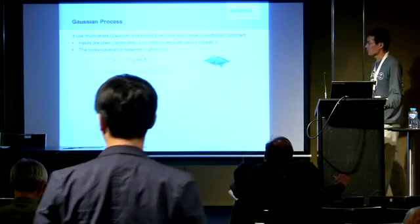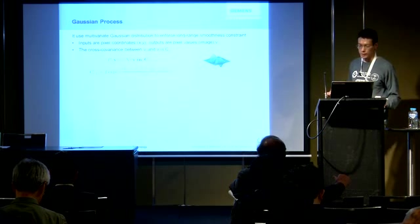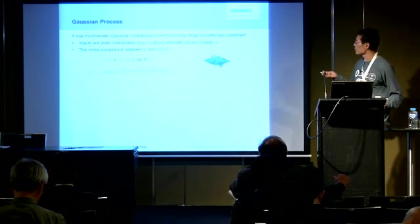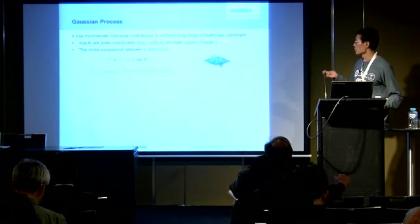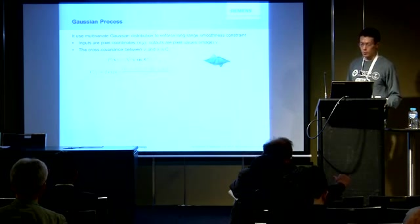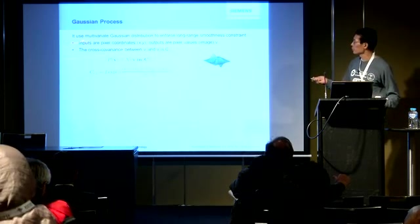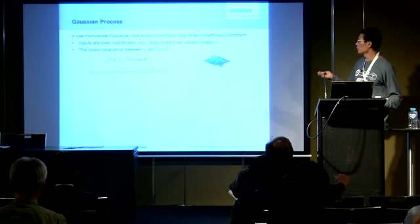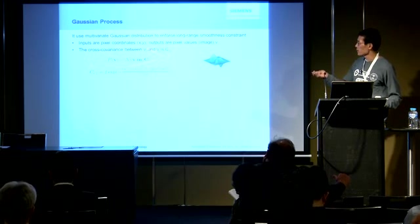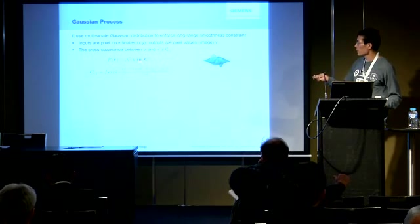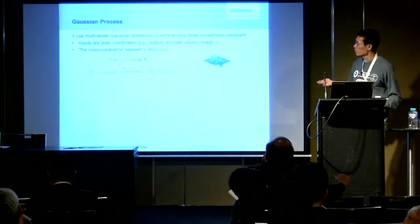We use Gaussian process — I think probably everyone has heard of Gaussian process many times at this KDD. Basically, it uses a multivariate Gaussian distribution to enforce a long-range smoothness constraint. When we talk about the process, we have to know what's the input and what's the output. Here, the input would be pixel coordinates x, y, and the output would be pixel values v. We can write down the multivariate Gaussian distribution: M is the mean, C is the covariance, and usually people use the squared exponential covariance function.